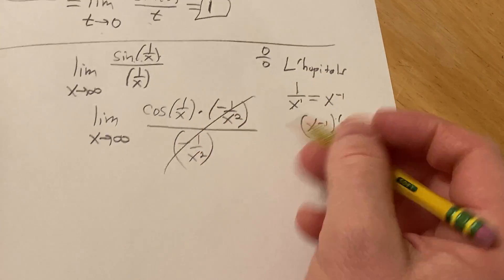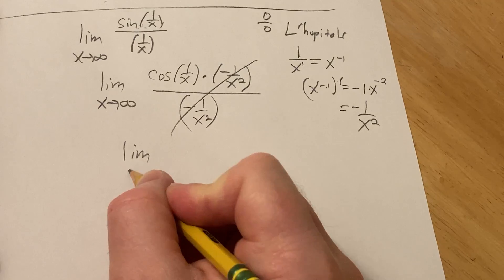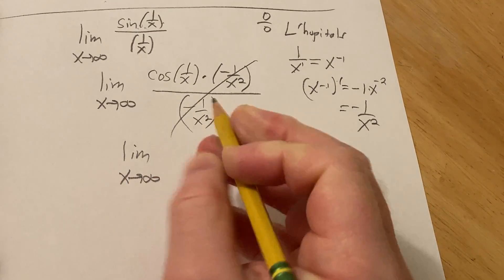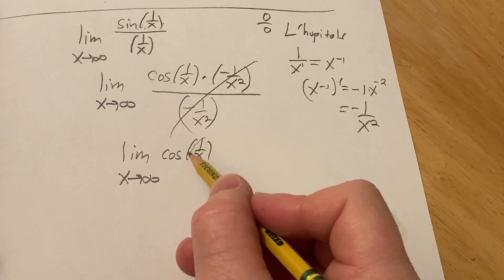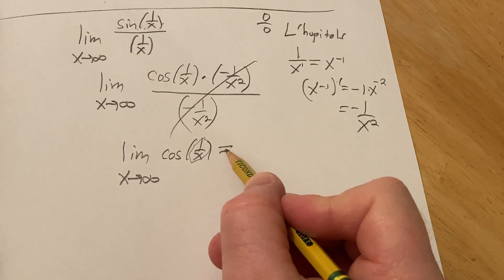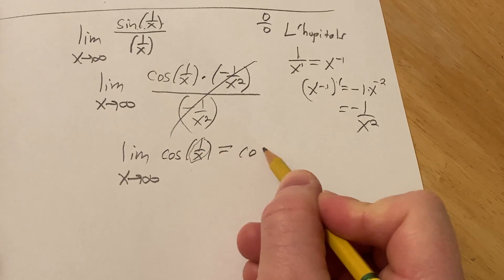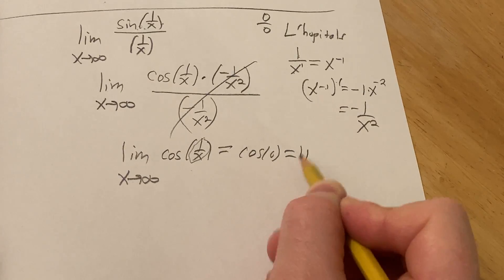So, boom! This is the limit as x approaches infinity of the cosine of 1 over x. And now it's a little more clear. As x approaches infinity, 1 over x approaches 0, so this is the cosine of 0, which is also equal to 1.